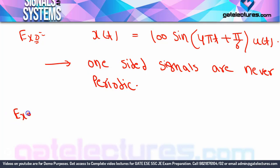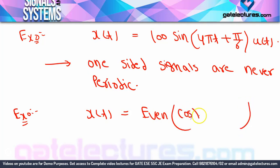One more concept: x(t) = even part of [cos(100πt)·u(t)]. You might think this is non-periodic because of u(t), but we need to find the even part first. The even part of a signal = [x(t) + x(-t)] / 2. So: [cos(100πt)·u(t) + cos(-100πt)·u(-t)] / 2. Since cos is even, cos(-100πt) = cos(100πt), giving cos(100πt)·[u(t) + u(-t)] / 2.